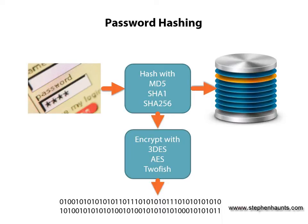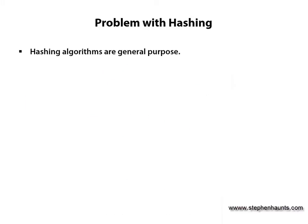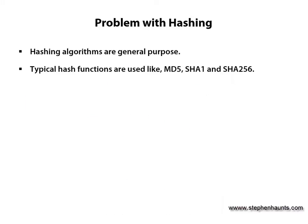The rest of this module will not discuss encryption using hashed password keys but focus on encoding passwords for authentication. Using hashing functions for storing passwords does have its problems though. Hash functions like MD5, SHA1 and SHA256 are all general purpose hash functions designed to calculate a message digest of large amounts of data in the shortest time possible. This means that they are excellent for ensuring the integrity of data but they are not very good for storing passwords.